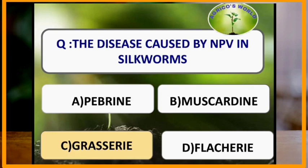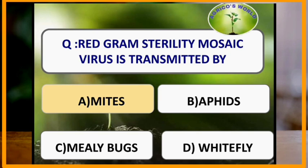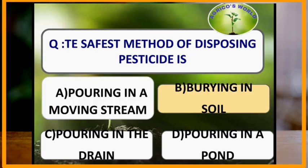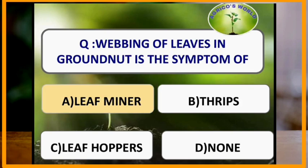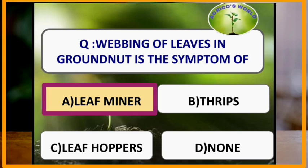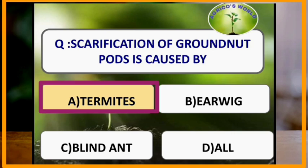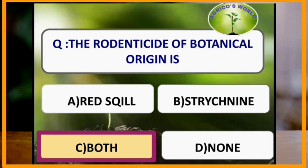The disease caused by nuclear polyhedrosis virus in silkworm is grasserie. Red gram sterility mosaic virus is transmitted by mites. The safest method of disposing pesticides is burying in the soil. Monophagous pest of rice is yellow stem borer. Webbing of leaves in groundnut is the symptom of leaf miner attack. Scarification of groundnut pods is caused by termites.